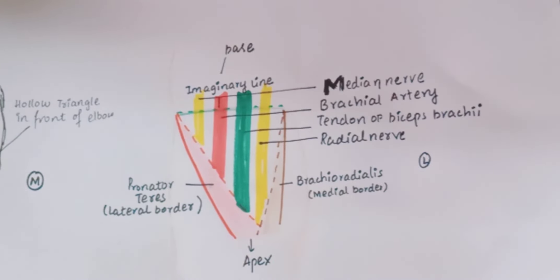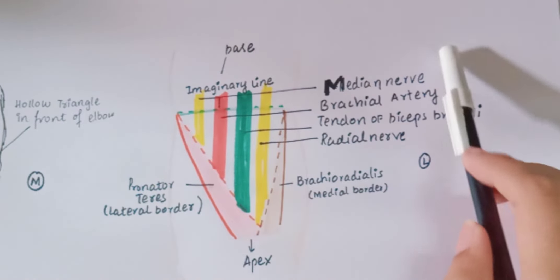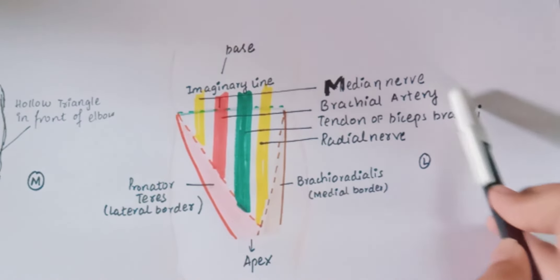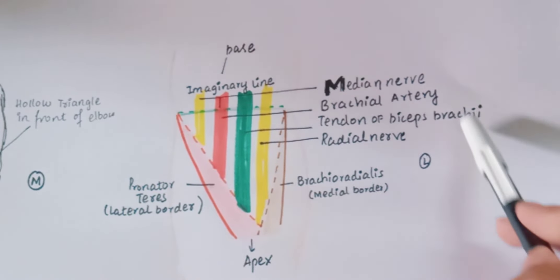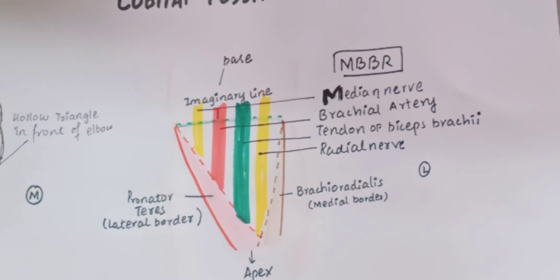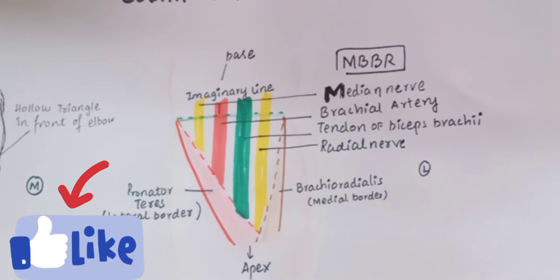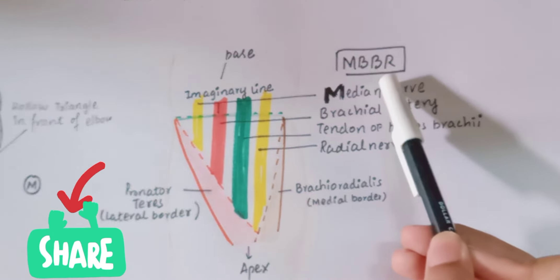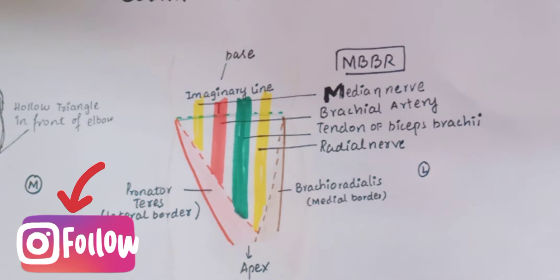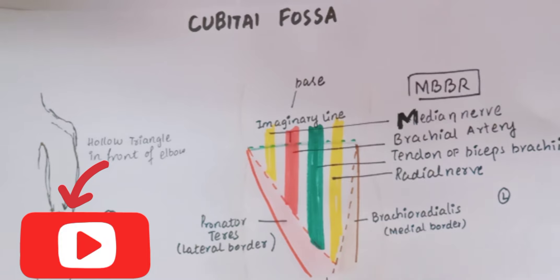The contents of the cubital fossa from medial to lateral include the median nerve, brachial artery, tendon of biceps brachii, and the radial nerve. There is also a mnemonic used for the contents of the cubital fossa known as MBBR. This is all about the cubital fossa.